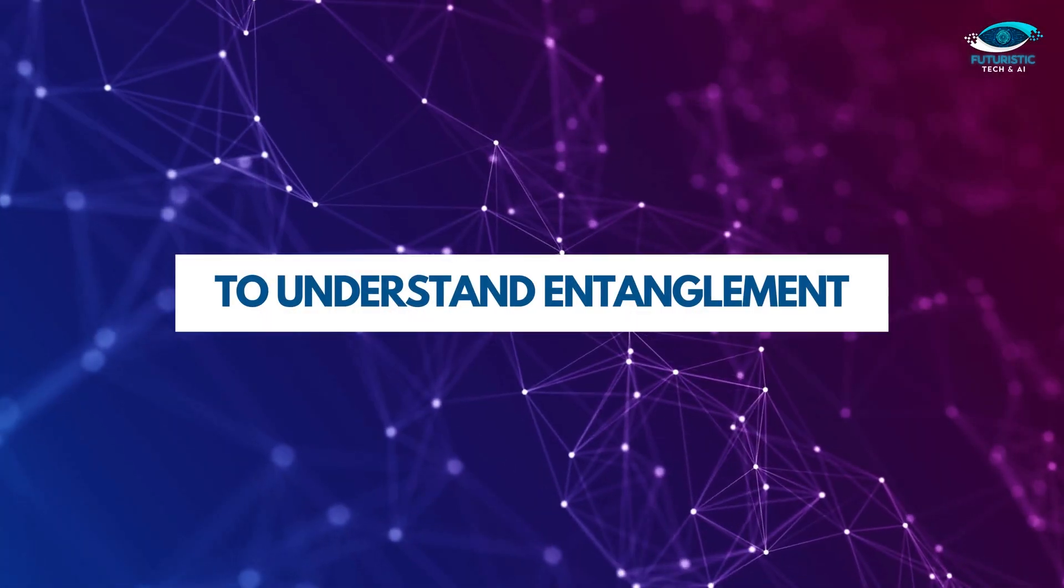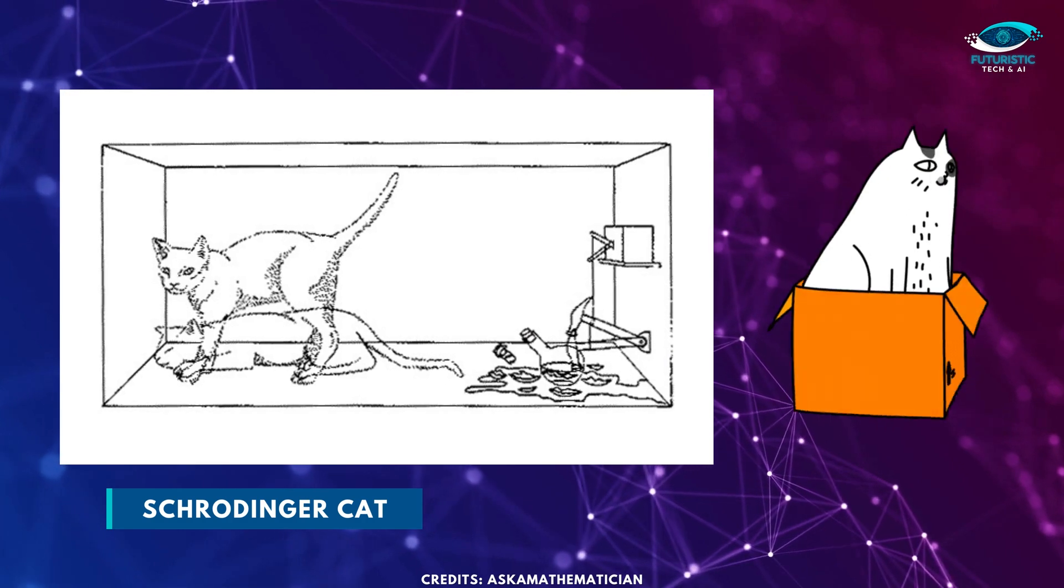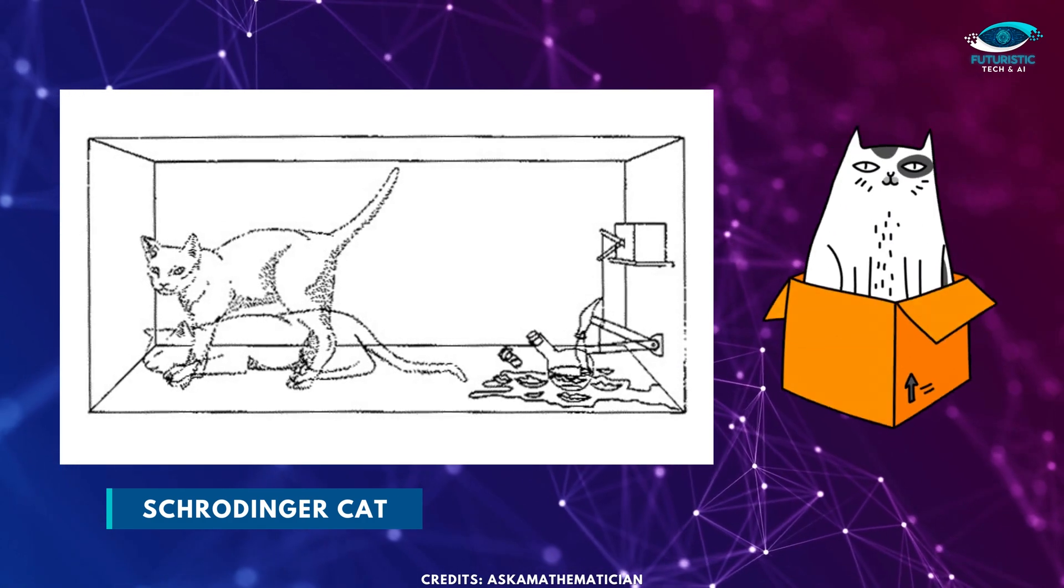To understand entanglement, Schrodinger used a teaching tool, Schrodinger Cat, to illustrate how some people were misinterpreting quantum mechanics.